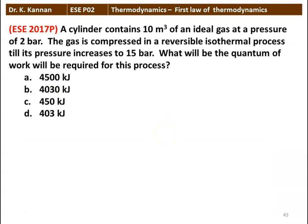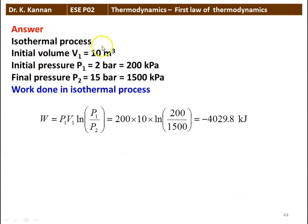Next question: a cylinder contains 10 m³ of ideal gas at 2 bar, compressed reversibly isothermally until pressure is 15 bar. Work required: W = P1V1 × ln(P1/P2) = 200 × 10 × ln(200/1500) = minus 4029.8 kJ. It is a compression process — work is done on the system. The answer is 4030 kilojoules.